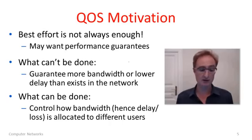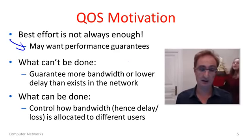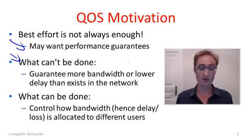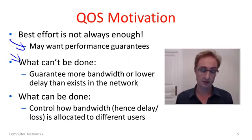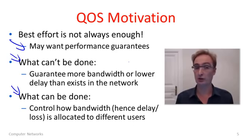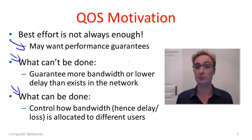Sometimes best effort just isn't enough. You might want different kinds of performance guarantees if you needed a minimum amount of bandwidth to make the application work. We can't guarantee more bandwidth than the network can provide, or lower delay than it takes for messages to cross the network. However, we can control how bandwidth is allocated to different applications, and by doing so we also control delay variation and loss.